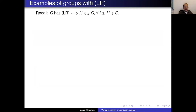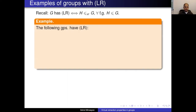What are examples of groups with LR? LR is a so-called finiteness property because all finite groups have it. In a finite group, every subgroup is a virtual retract because every subgroup has finite index — the retraction is just the identity of the subgroup onto itself.